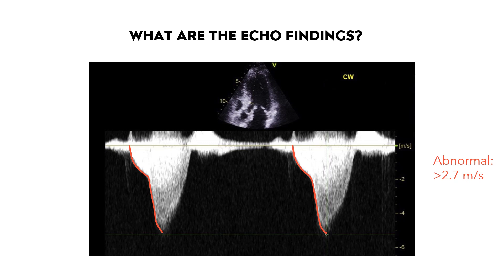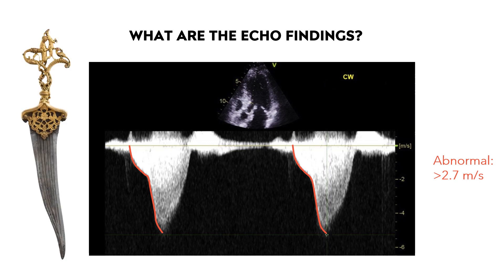This shape is often referred to as the dagger appearance. The peak velocity shown is 5.3 meters per second — very fast blood flow. Normally the velocity is about 1 meter per second here. In an LVOTO, anything over 2.7 meters per second is considered abnormal, and the higher the velocity, the worse the obstruction.